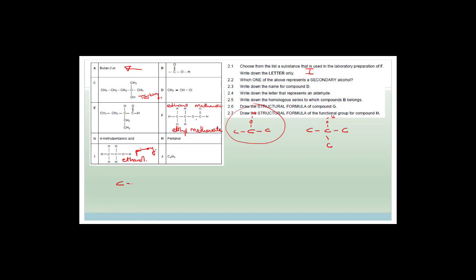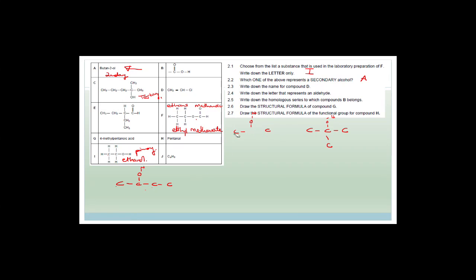Butane-2-ol: carbon 1, 2, 3, 4, and on the second carbon there's a hydroxyl group. This carbon belongs to two other carbons — that is secondary. So the correct answer is A. Obviously I'm taking a little longer because I'm explaining it; if you can automatically see that it's secondary, you don't need to write all this extra working.